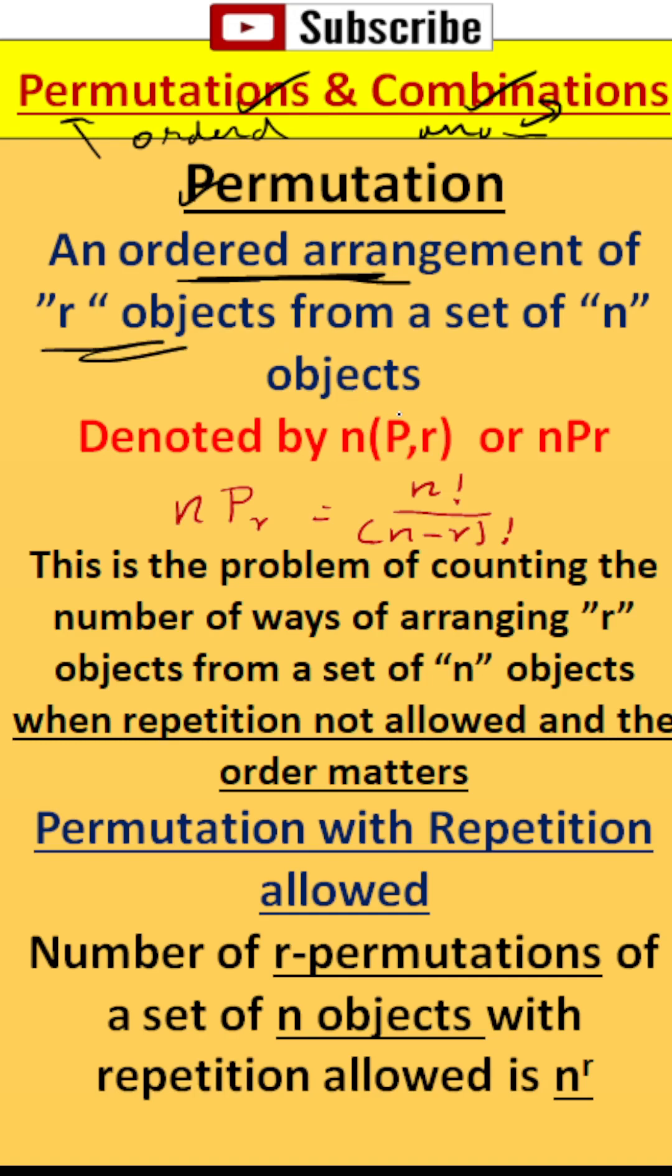Generally it is denoted by n(P,r) or nPr. For that, we make use of the formula to calculate the ordered selection of r objects among n objects as n factorial over n minus r factorial.